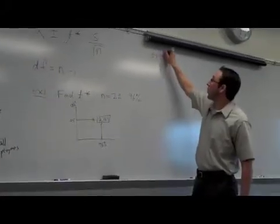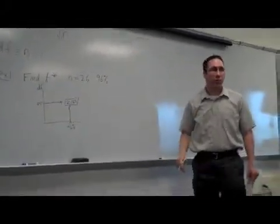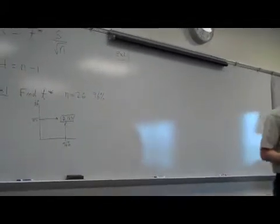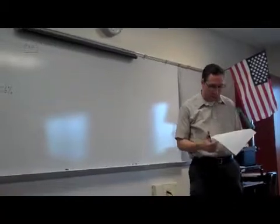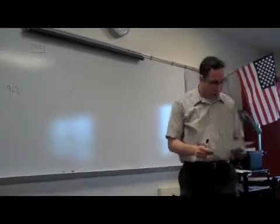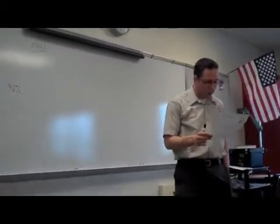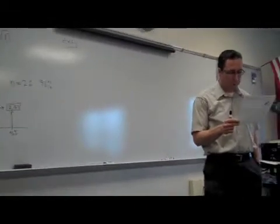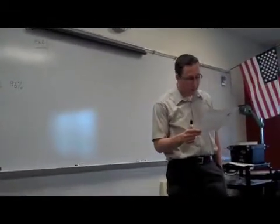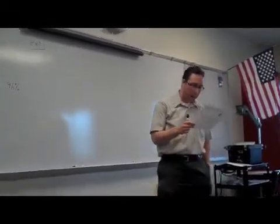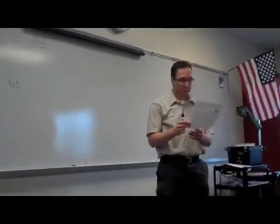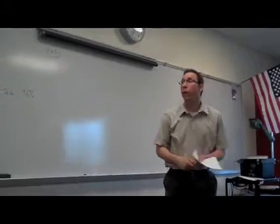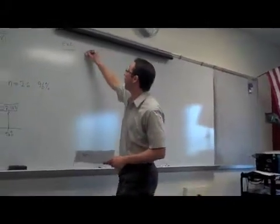Example two finishes the work that example one started. Example two says find a 96 percent confidence interval for the mean number of miles a person commutes in Amherst to work. We've got a group of 26 people that were randomly selected, and they had a mean of 10 miles, and their sample standard deviation was 2.